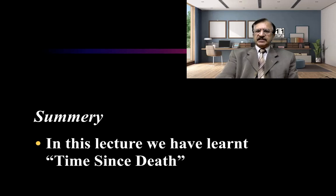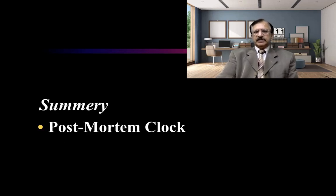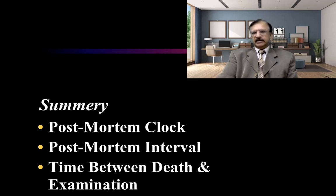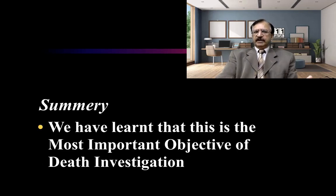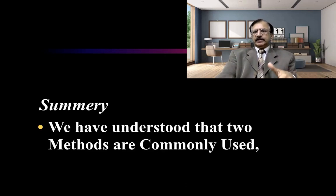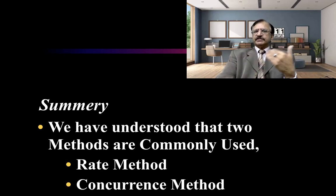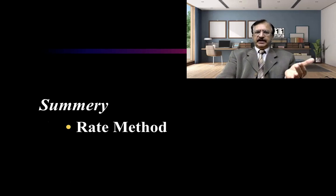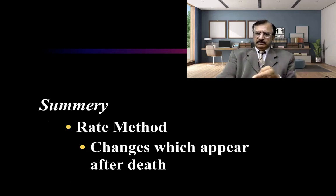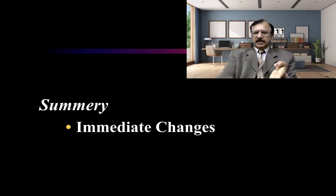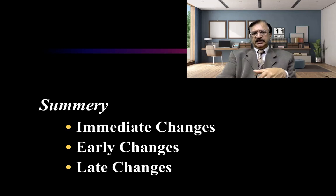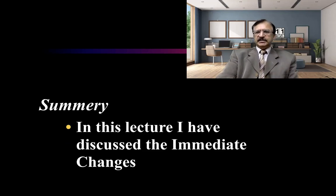In summary, we have started discussion on the time since death — the post-mortem clock, post-mortem interval, and time between death and examination. The most important objective of death investigation is to determine since how long the body is dead. Two methods are commonly employed: the rate method and the concurrence method. We discussed the rate method, covering changes that appear after death — immediate changes, early changes, and late changes. In this lecture we discussed the immediate changes, which are used to certify death at the moment of death.